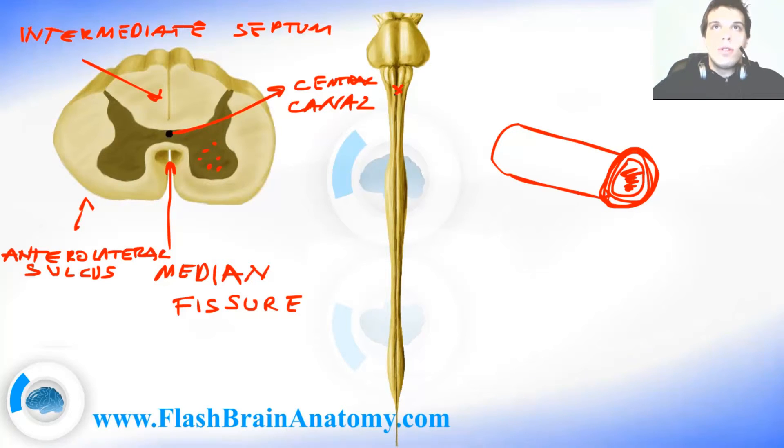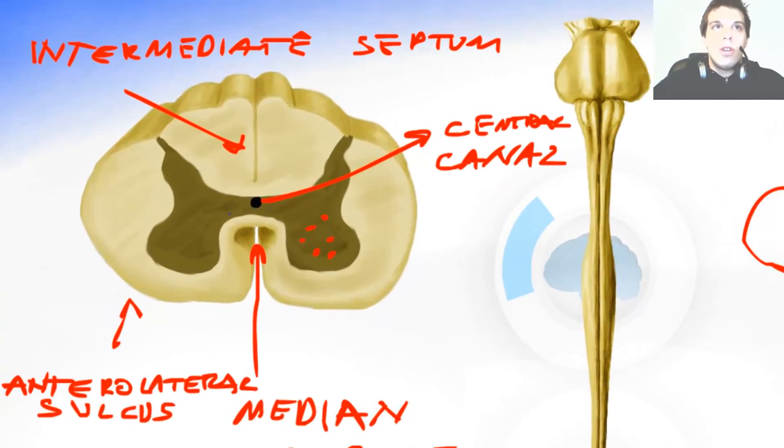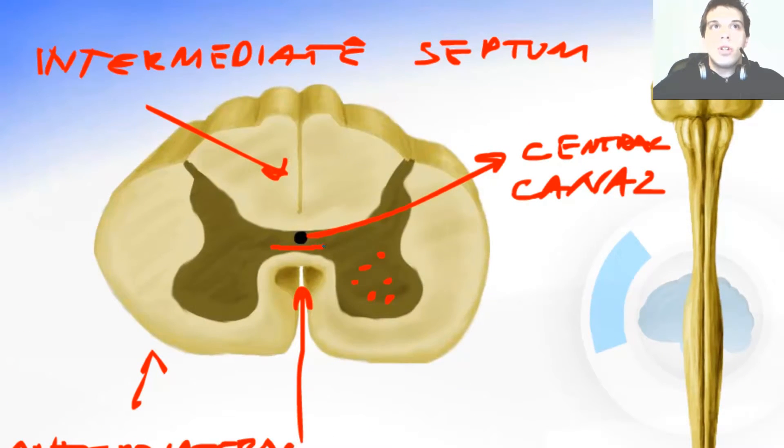Now I explained you recently about the crossing fibers in the decussation of pyramids. But along the whole length of the spinal cord there are nerve fibers that cross sides. And we call these the commissures. So over here you can see the gray commissure and the white commissure. This is the place where the sides exchange fibers.